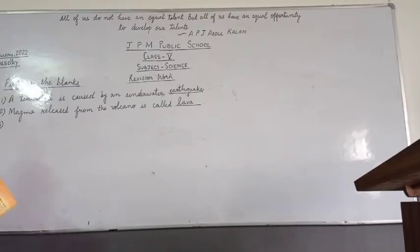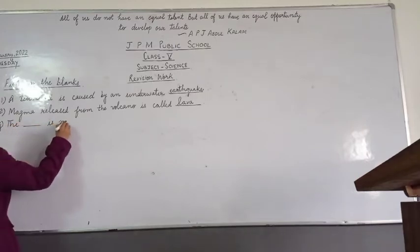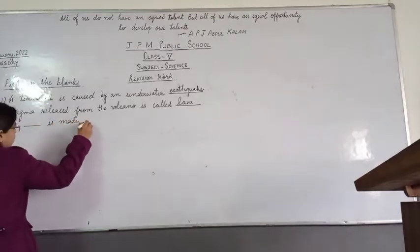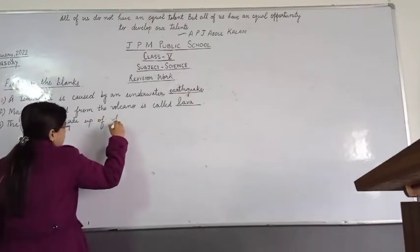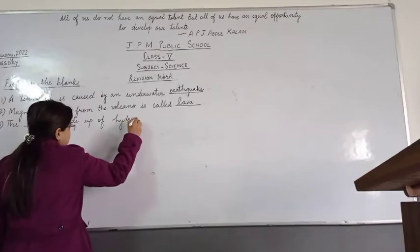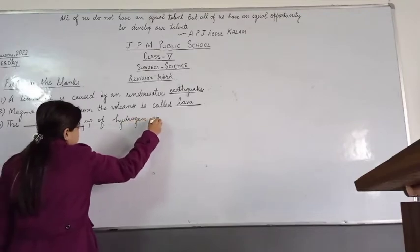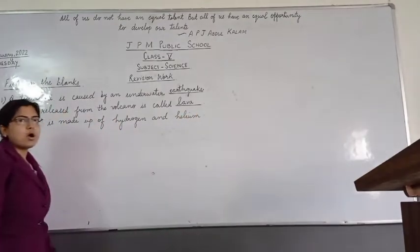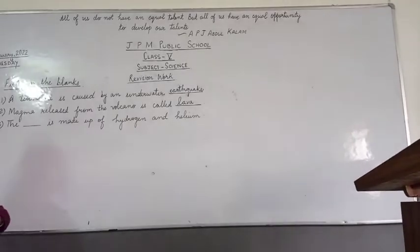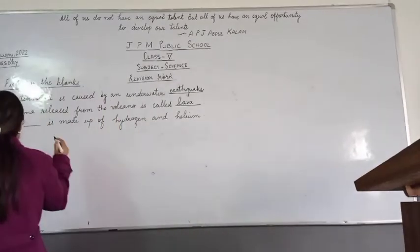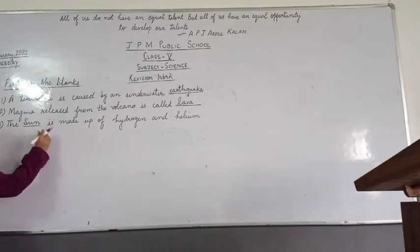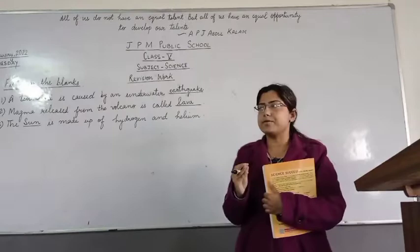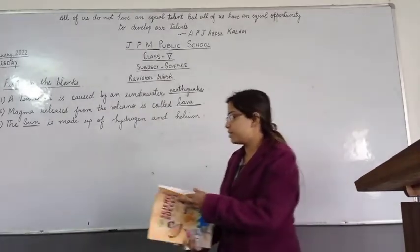Number three: The dash is made up of hydrogen and helium. Which is made up of hydrogen and helium? The sun. So the answer is the sun is made up of hydrogen and helium. The sun is made up of two gases: hydrogen and helium. Now come to number 4.